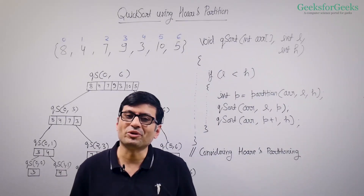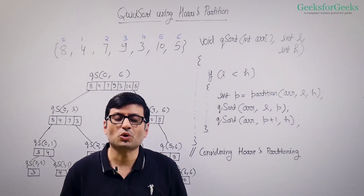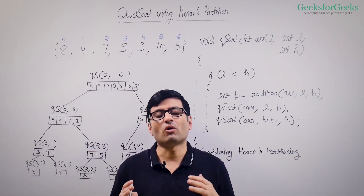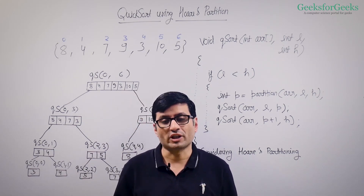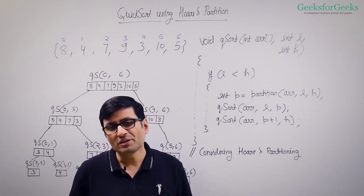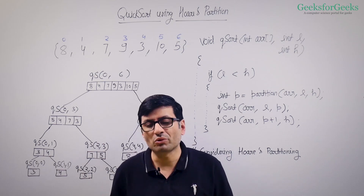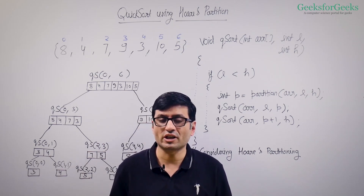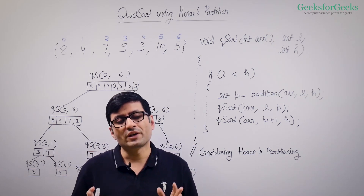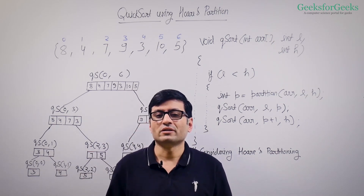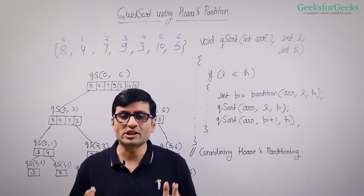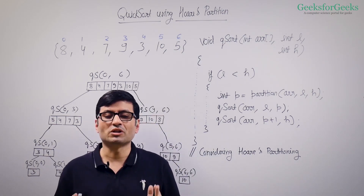In this video we are going to talk about the quicksort algorithm using Hoare's partition. We have already talked about quicksort using Lomuto partition. We are talking about them separately because the main quicksort algorithm changes according to the partition. Also, different academic environments teach different partitions. So let's understand quicksort considering Hoare's partition.